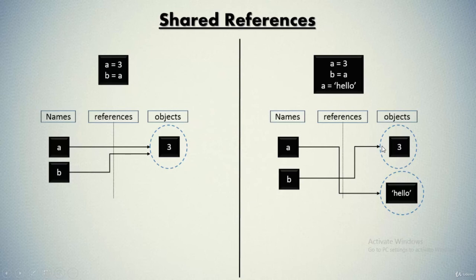So as with all Python assignments, this statement simply makes a new object to represent the string 'hello' and sets 'a' to reference this new object. It does not, however, change the value of 'b'. 'b' still references the original object it was earlier referencing, which is the integer 3. That is how you work with integers, assignments and shared references.